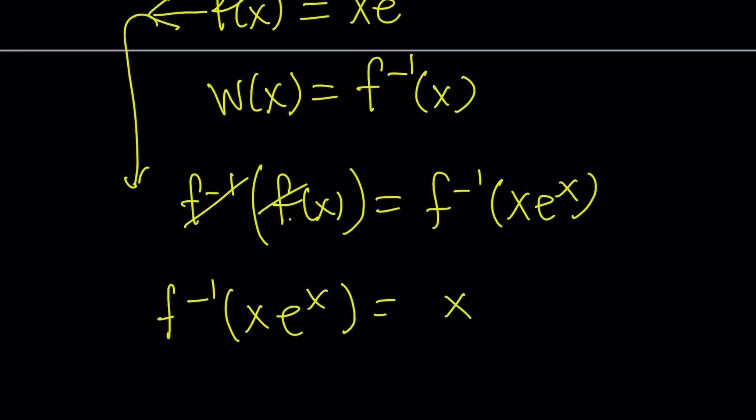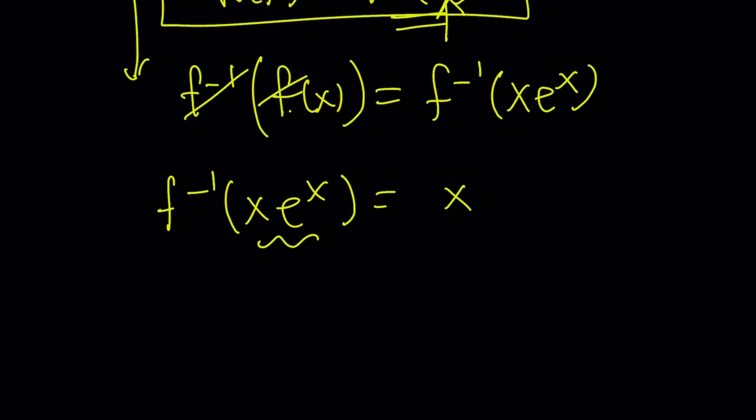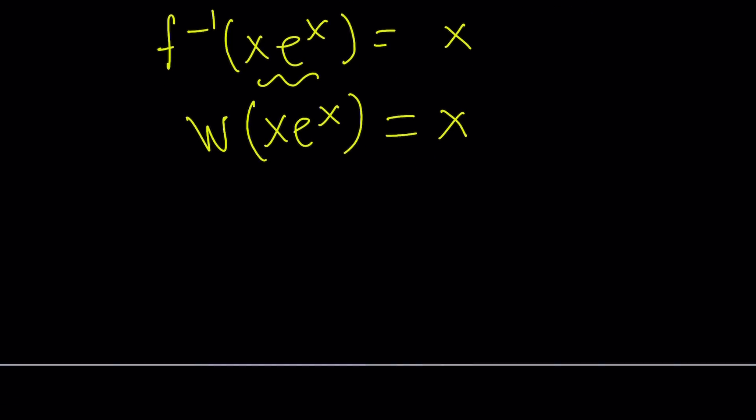But we defined F inverse as Lambert's W function. So, let's go ahead and replace F inverse with W using this. So, F inverse of X E to the X is going to be W of X E to the X, and that is equal to X. So, in other words, Lambert's W function is a special function where when the input is X times E to the X, the output is always going to be X. Under certain conditions, there are branches, real complex, so on and so forth. I'll skip all those complications because I don't like complications. Okay.